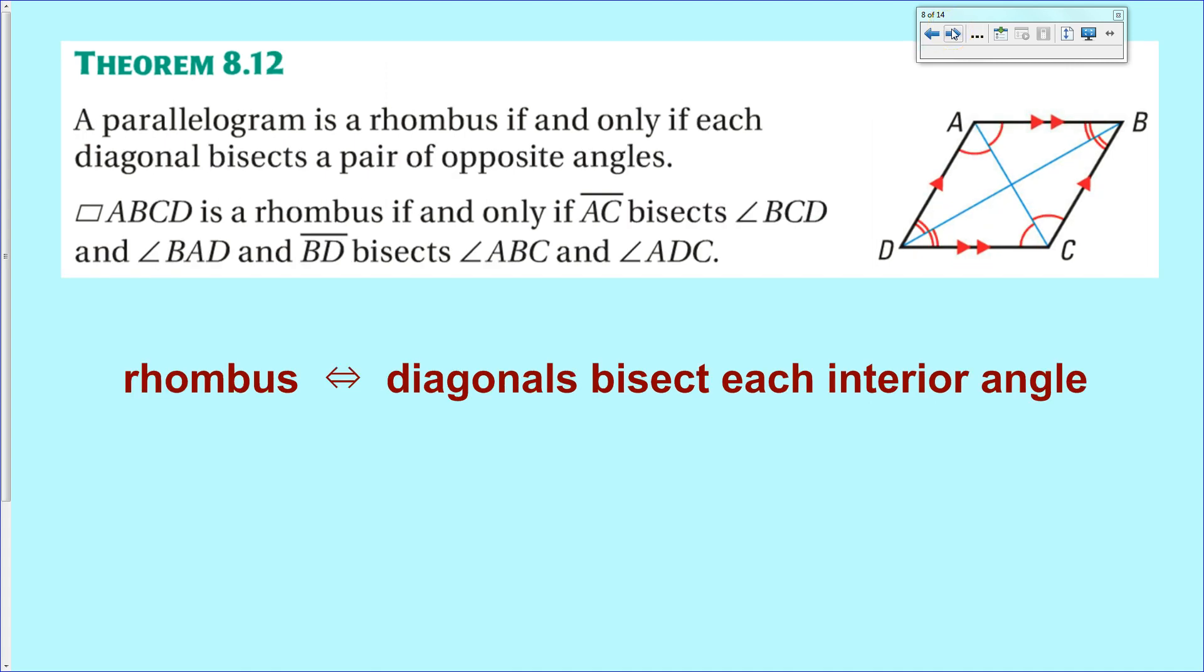Second one, a rhombus diagonals bisect pairs of opposing angles, or the diagonals bisect each interior angle of a rhombus. And that again goes both ways. If you have a rhombus, then the diagonals bisect each interior angle. If you have diagonals bisecting interior angles, then it must be a rhombus.